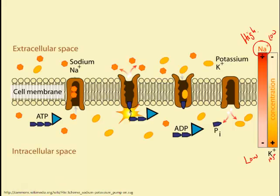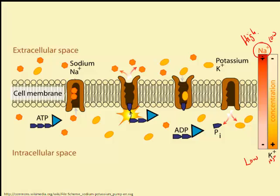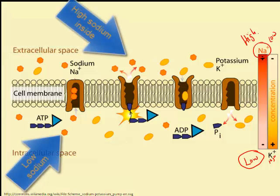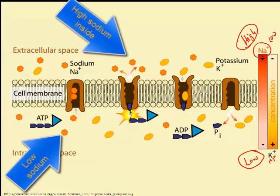Let's take a look at the sodium-potassium pump. The goal of the sodium-potassium pump is to create a net positive charge on the outside of the cell. This is used by nerve cells when they are at rest to create electrical potential. It's important to note the relative concentrations on the outside and inside of the cell. Inside the cell there's already a low concentration of sodium and a higher concentration outside.